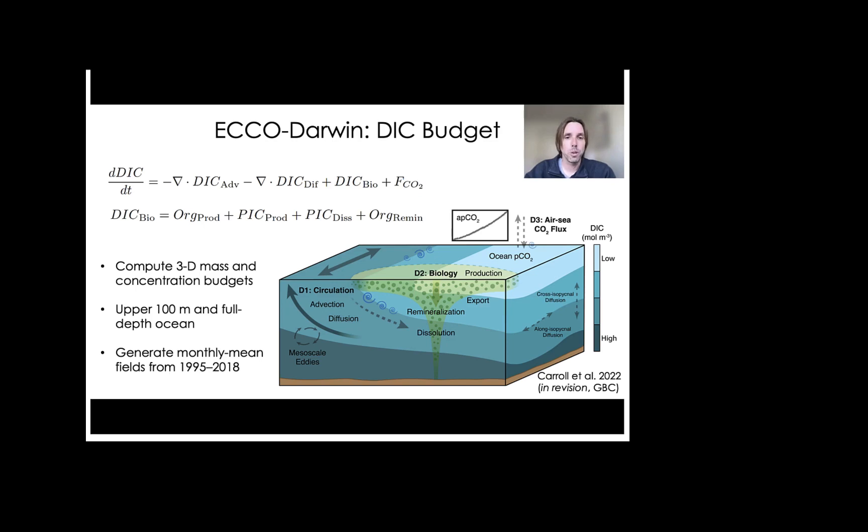So using ECCO-Darwin, we have computed a data-constrained three-dimensional global ocean DIC budget. And the temporal evolution of DIC, which is shown here in the tendency term dDIC/dt, is driven by contributions from advection, diffusion, biology, and air-sea CO2 flux. And these processes that are captured by the DIC budget in the model are shown in the schematic.